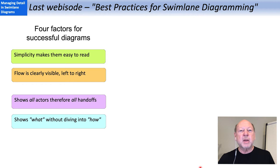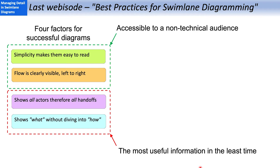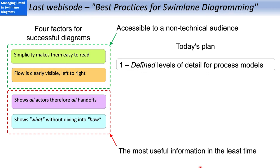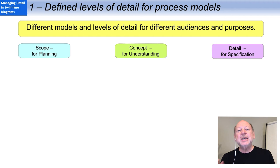Last time we looked at some best practices for swim lane diagramming to overcome common problems. Simplicity and flow, the first of the four factors we looked at, are all about making our models accessible to a non-technical audience. The last two about showing all the actors and focusing on what but not how gives us the most useful information in the least time. Today we're going to look at well-known standard defined levels of detail, how to get out of the weeds if you're already in, and finally three questions to help you get through your initial flow model and stay out of excessive detail.